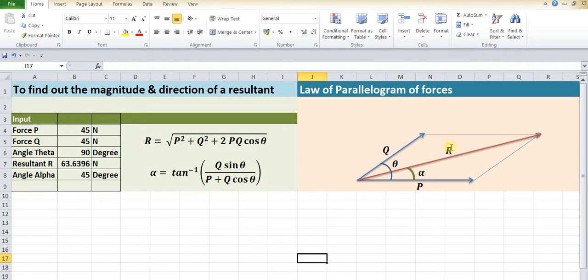Here we have shown two concurrent forces: force P is shown over here and force Q is shown over here, making an angle of theta. Now we have completed this parallelogram. Then the diagonal represents the resultant of these two concurrent forces P and Q, and it makes an angle of alpha.